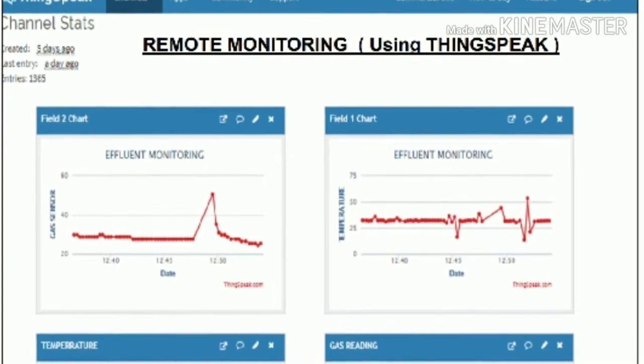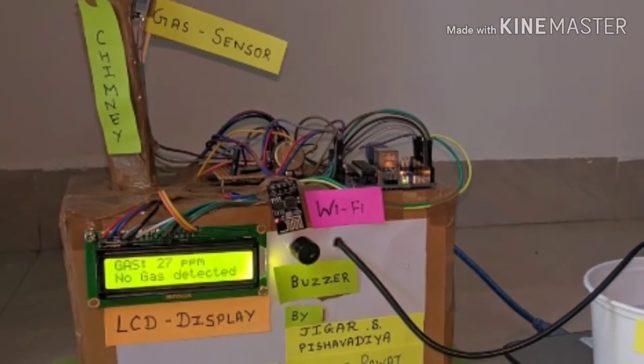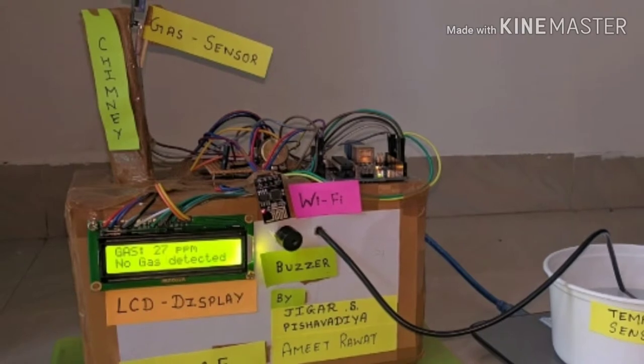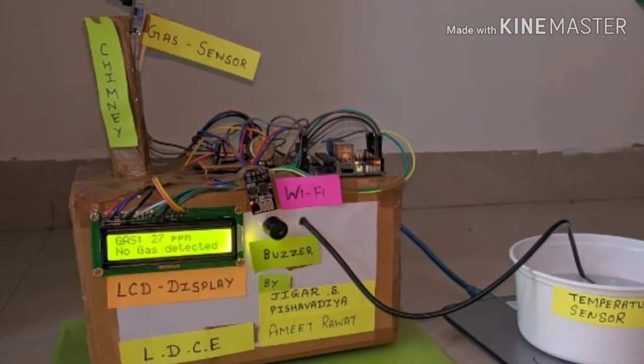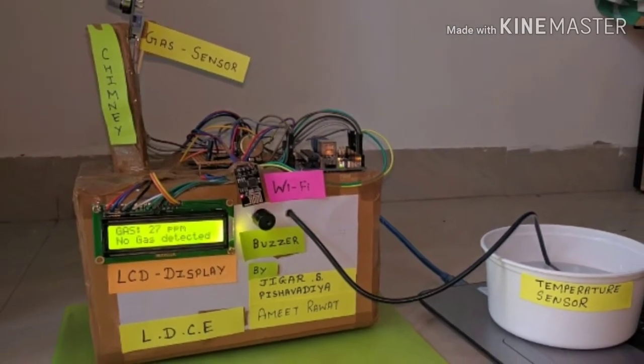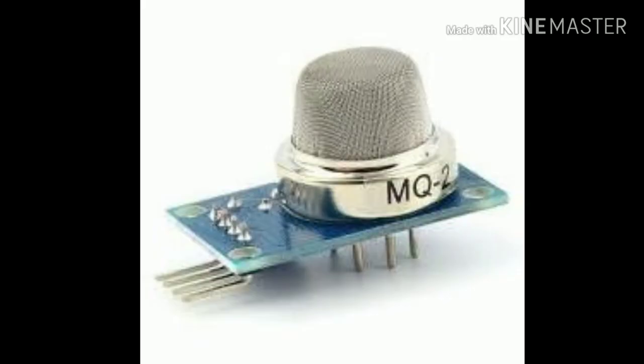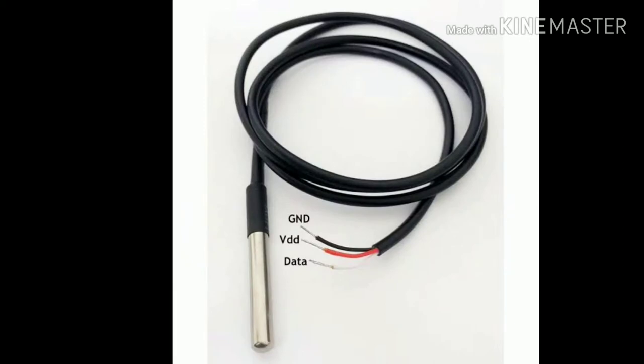Basically our aim is to cover the industry ranging from small scale to large scale industry so that government gets adequate data and takes necessary control action. In our project we have used two sensors: MQ2 gas sensor and the DS18B20 temperature sensor.